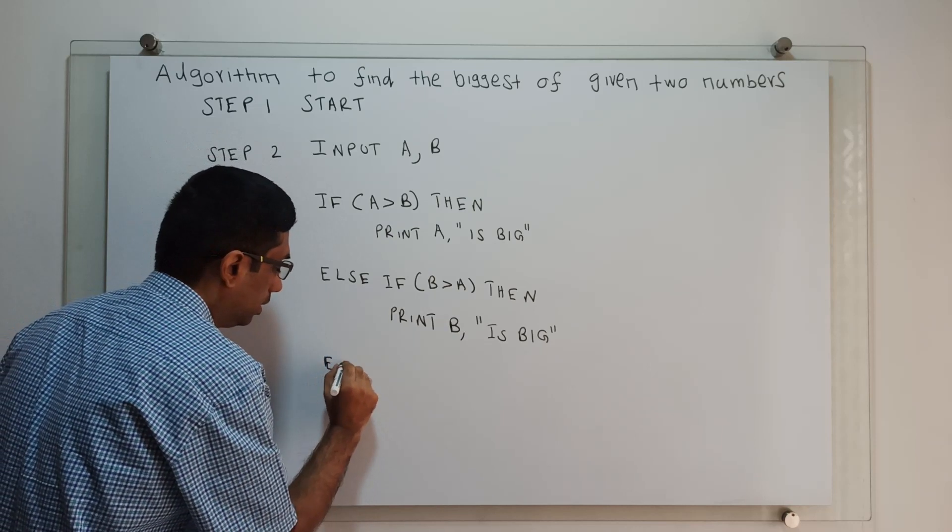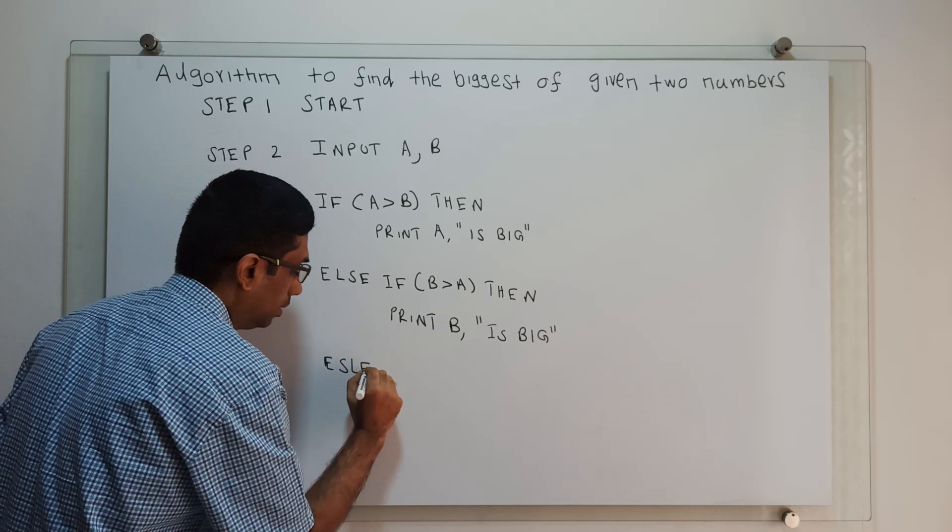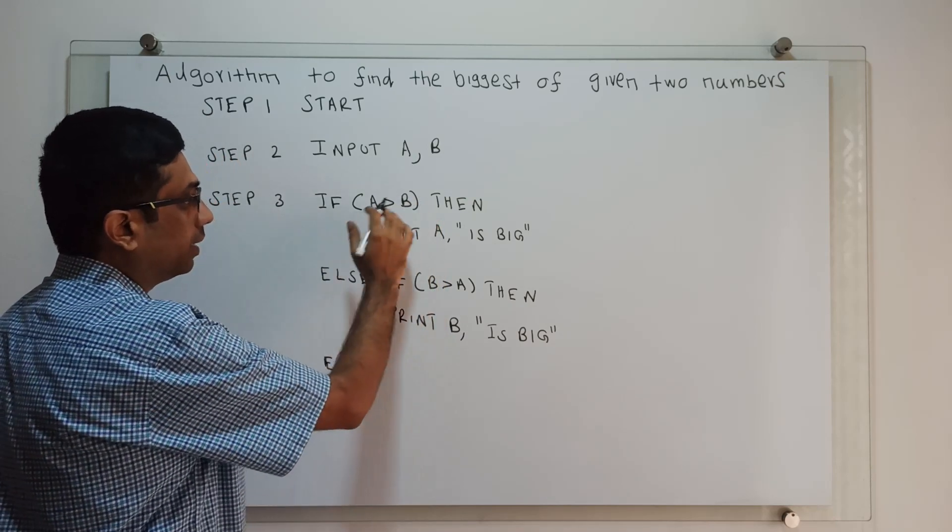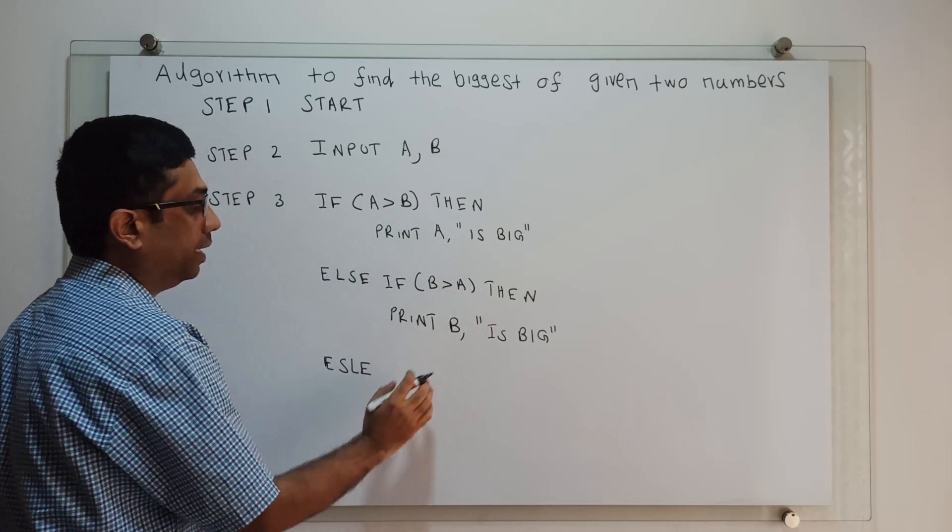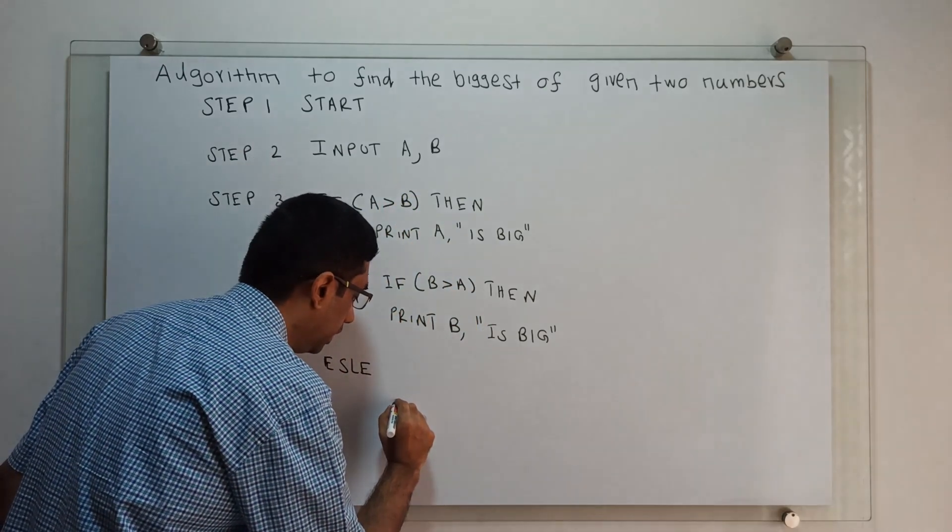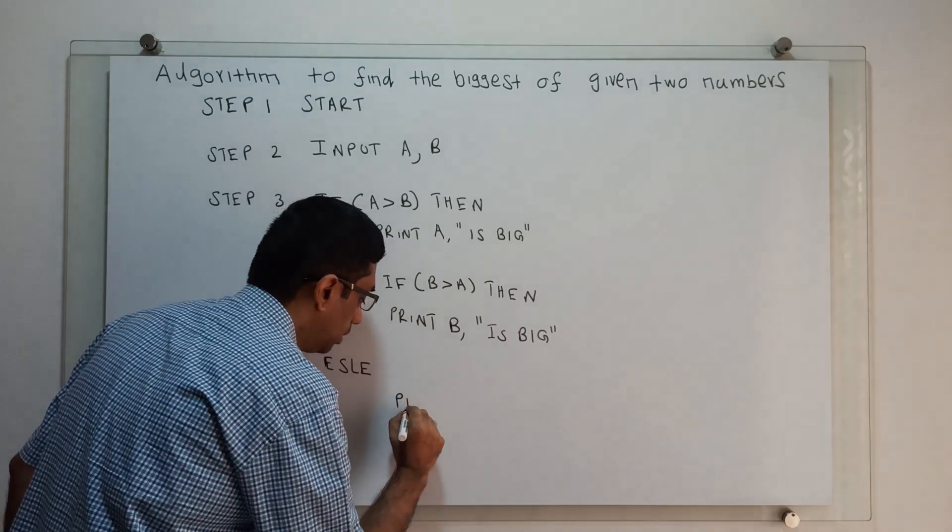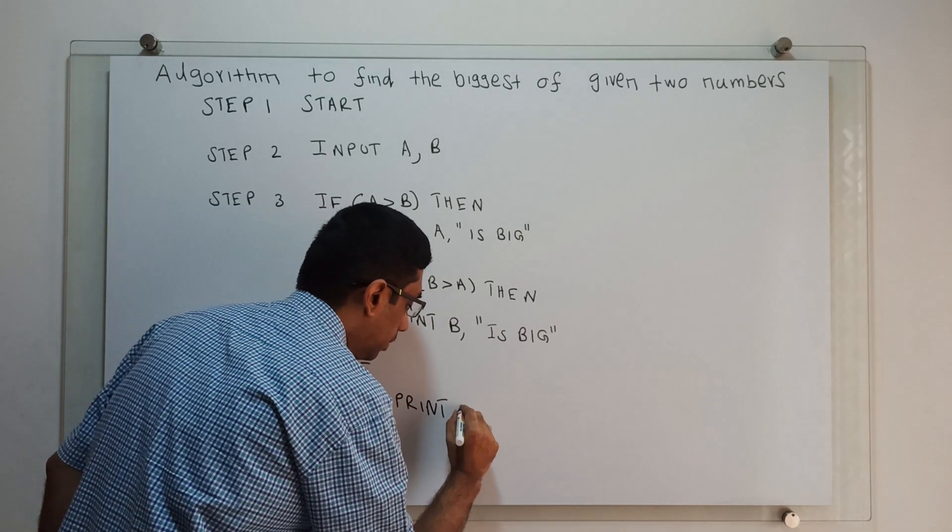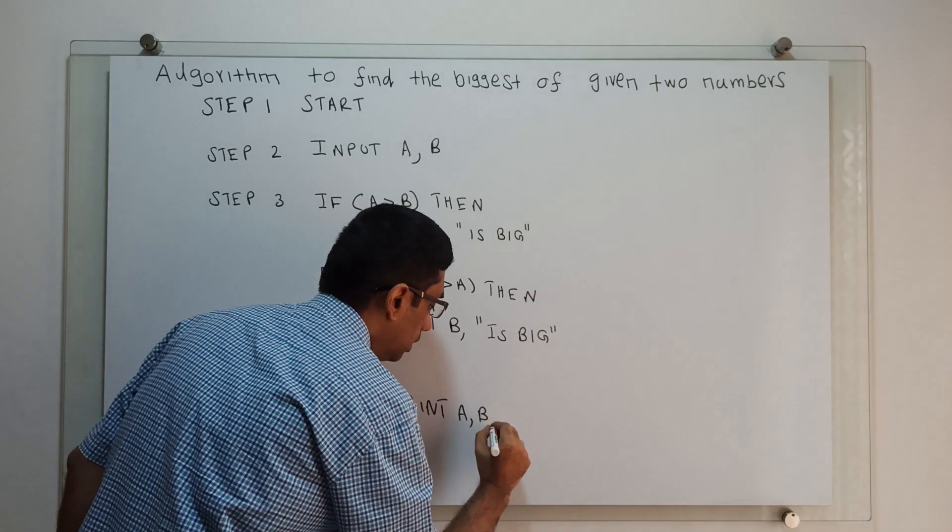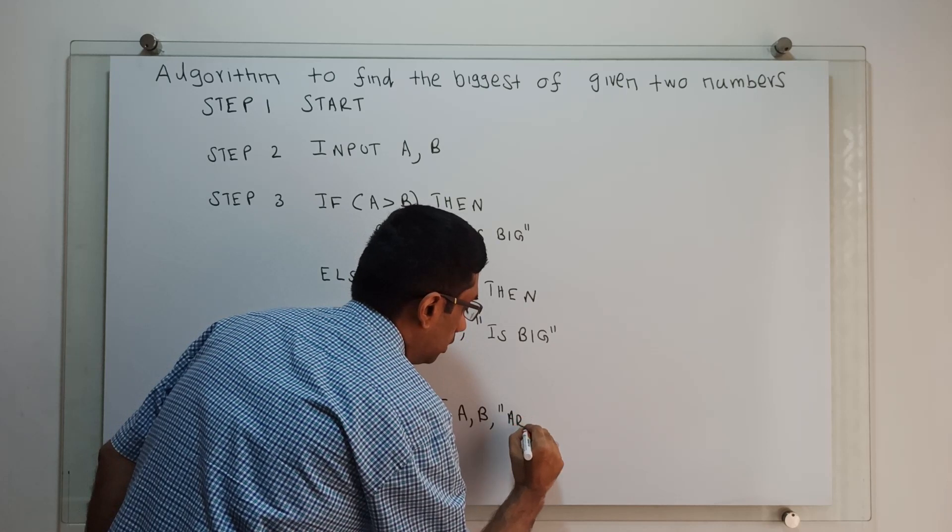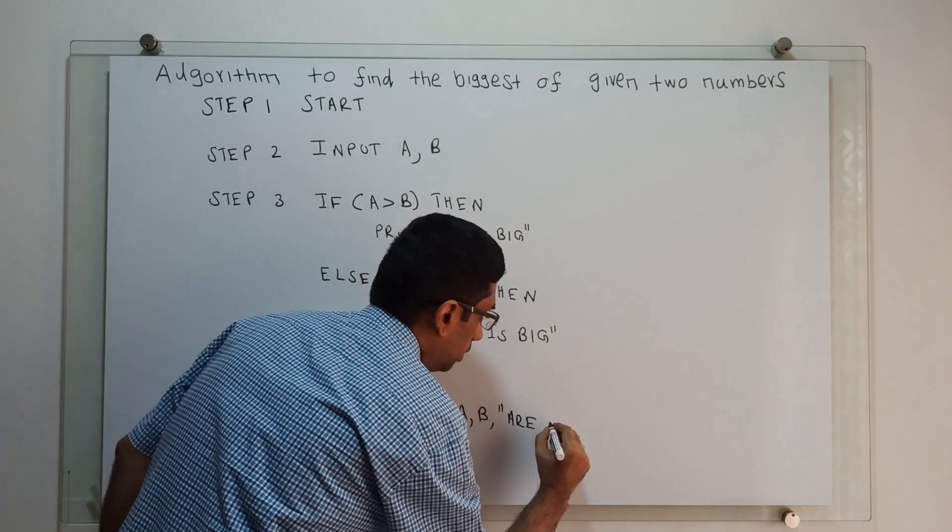Then we are having an else statement. If A is not greater than B and B is not greater than A, then the control will come to the else statement. Yes, I am printing: print A, B are equal.